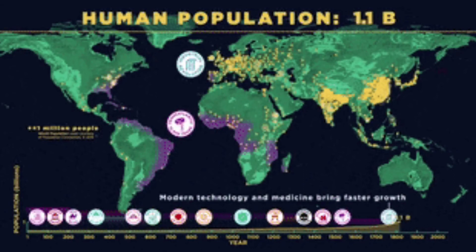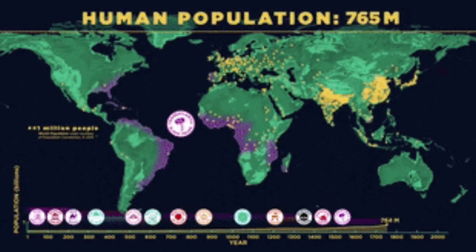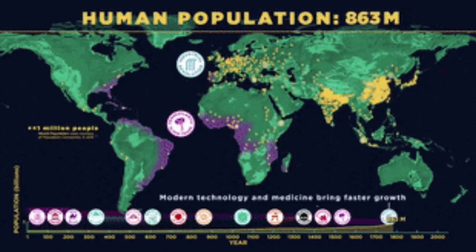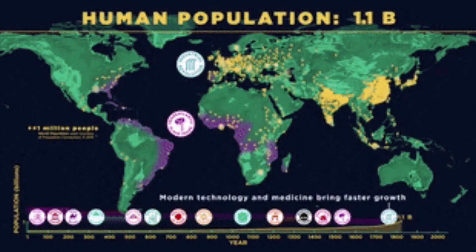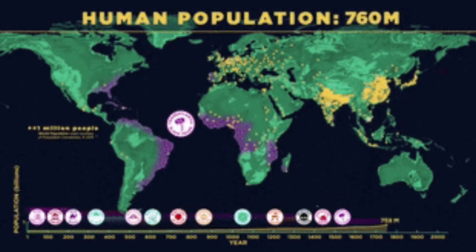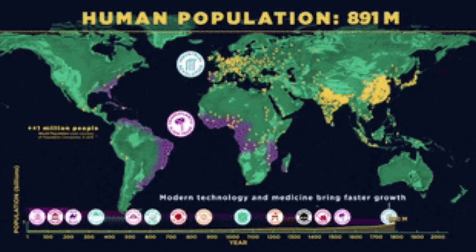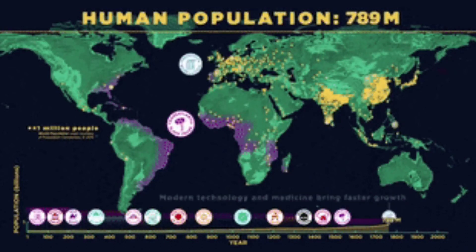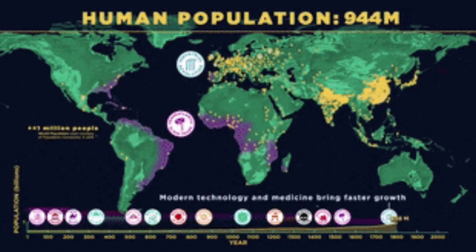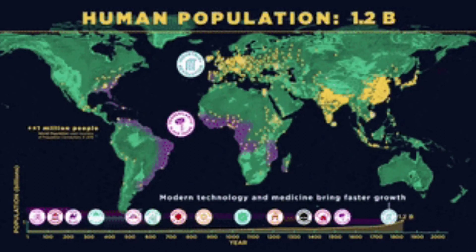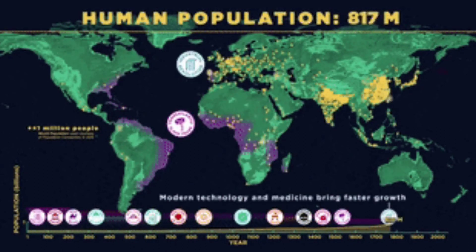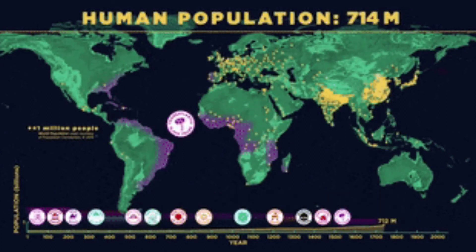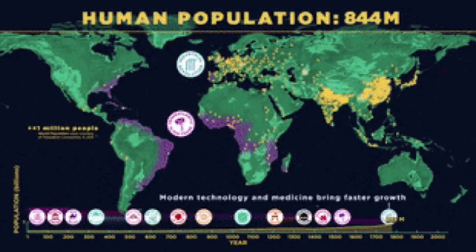The world population witnessed rapid increase from the middle of the 20th century, growing from 250 crores to 600 crores during the 50 years from 1950 to 2000. This means the world population increased by 350 crores within 50 years, as against a growth of only 150 crores within the long period of 150 years from 1800 to 1950. This phenomenon is known as world population explosion.